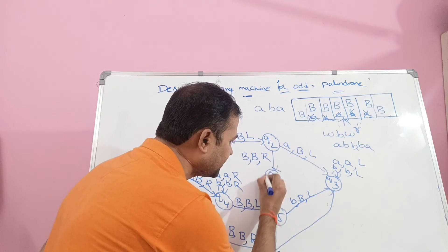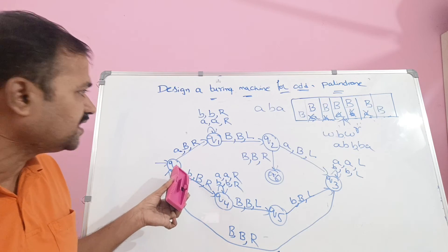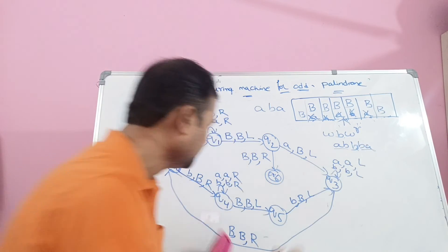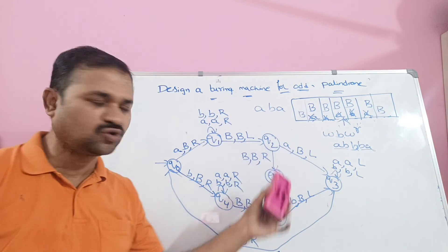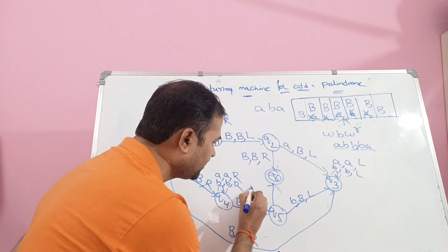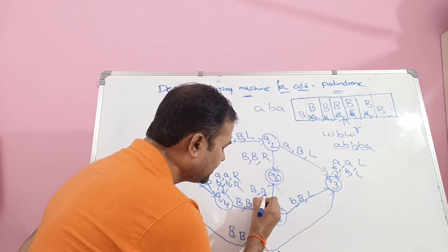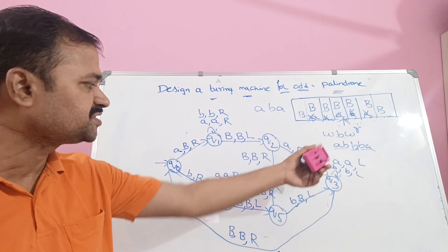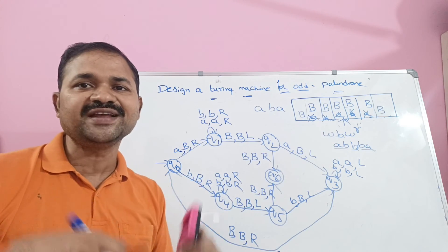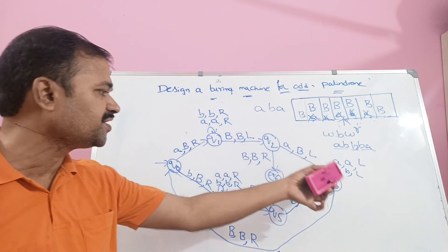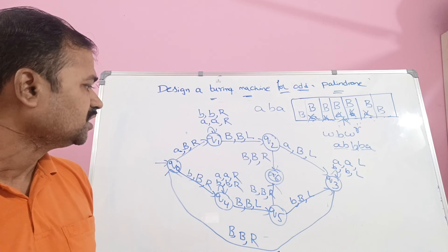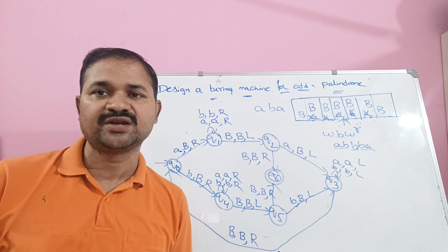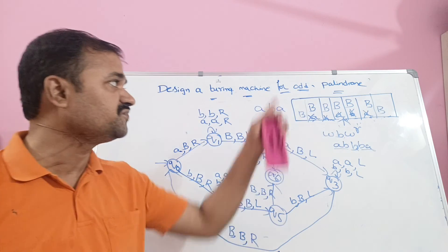If we apply the blank symbol on Q2, don't change it and move the head towards the left — then we go to the final state. Q6 is the final state. If the string in between W and W^R is B, from Q5, if we read the blank symbol on Q5, don't change it and move the head left or right — we reach Q6. If it is not a palindrome string, we may get stuck at Q1, Q2, Q3, Q4, or Q5 and never reach Q6. This confirms that our Turing machine for palindrome is correct.